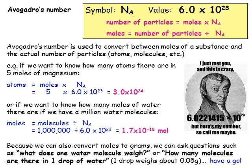So now we can convert between moles and mass, and between moles and the numbers of atoms and molecules. If we use both of these together, we can work out the mass of one molecule of water, or work out how many molecules there are in one drop of water, which weighs about 0.05 grams. Pause the video and have a go at working these out.